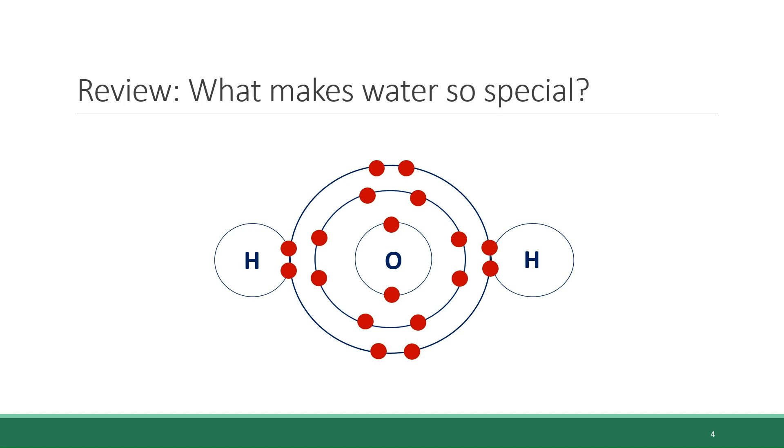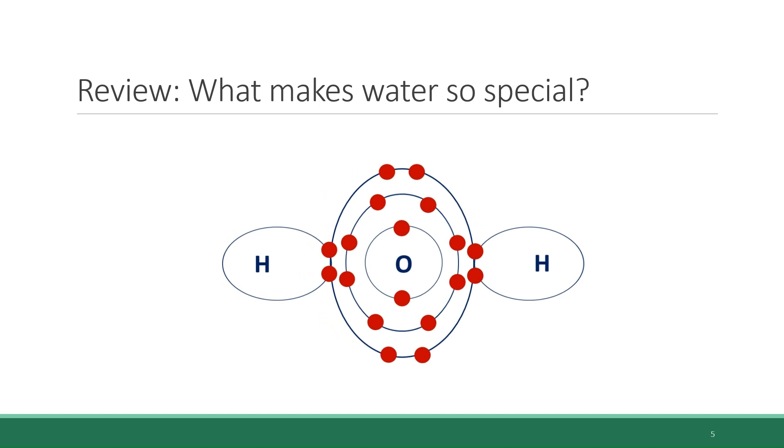Remember, ionic molecules transfer electrons between their atoms. Covalent molecules share their electrons. And this sharing relationship is not an equal one, because oxygen is far more electron-greedy than hydrogen is, and it will draw the electrons towards itself and away from its hydrogen atom partners.